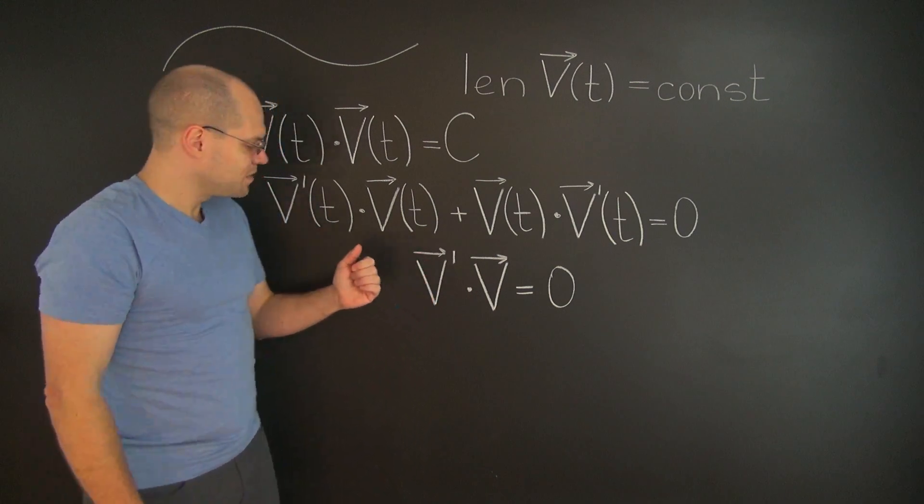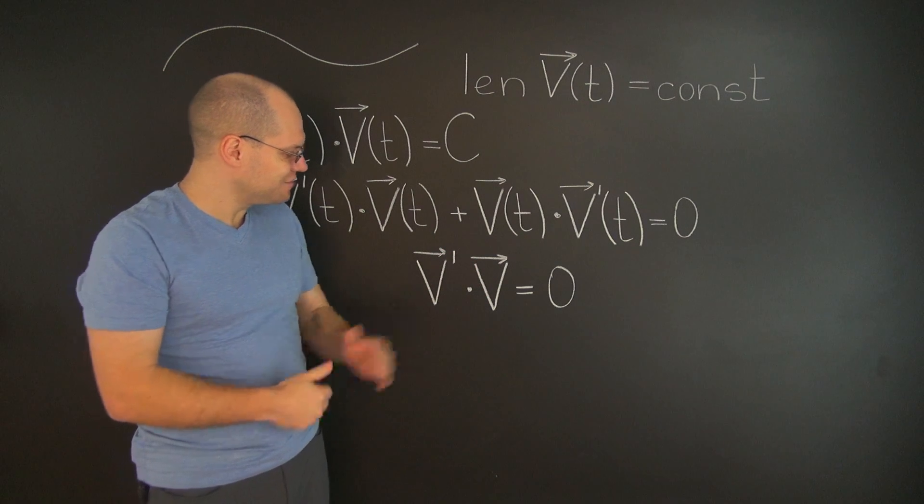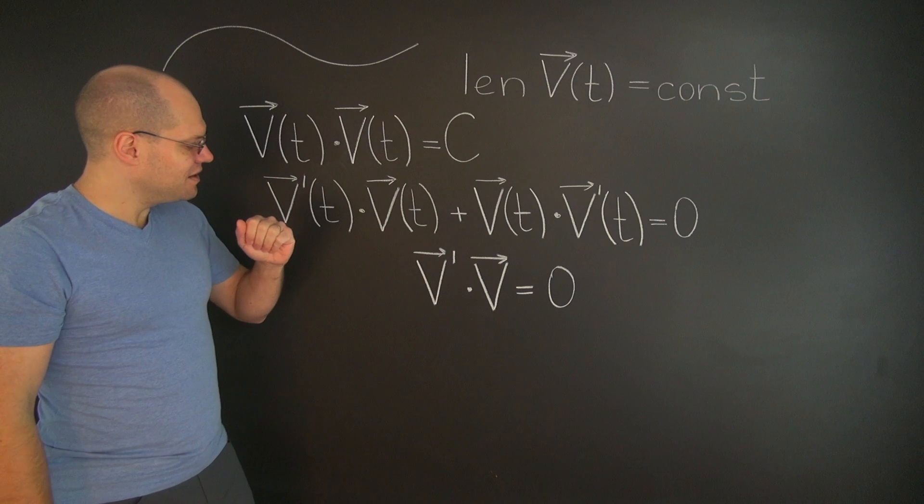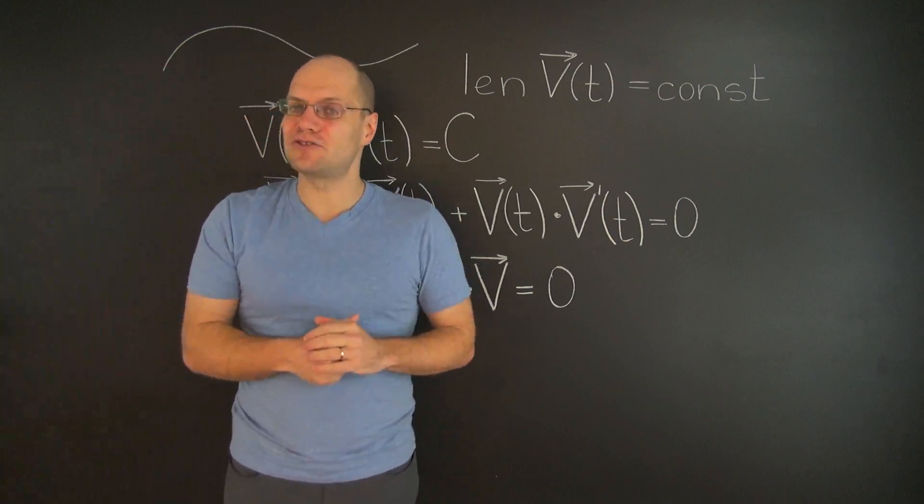So we have discovered that the dot product of the derivative of V with V itself equals zero. In other words, V prime is orthogonal to V, just as we set out to prove.